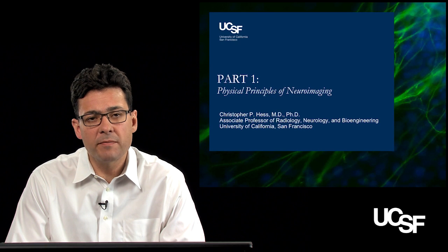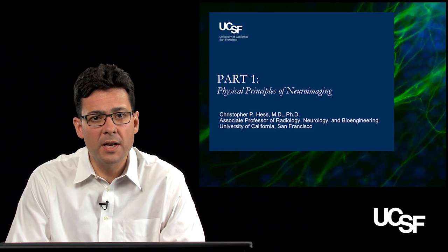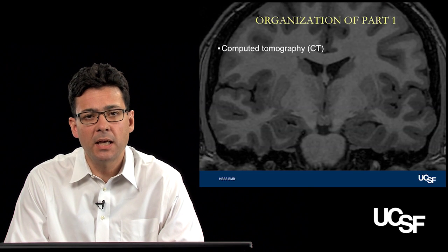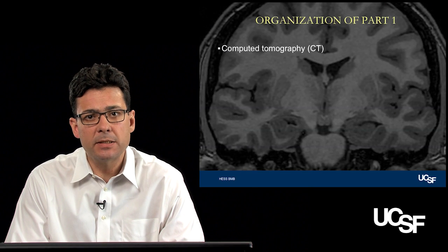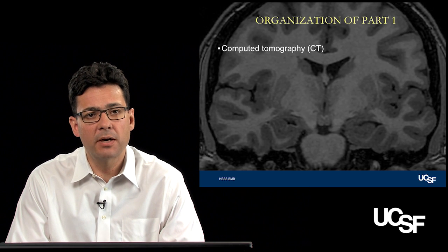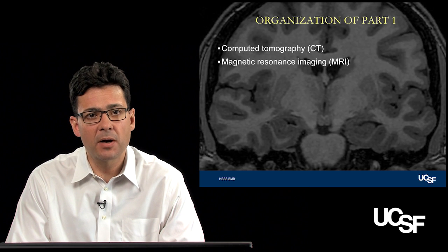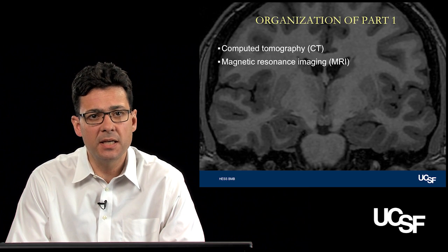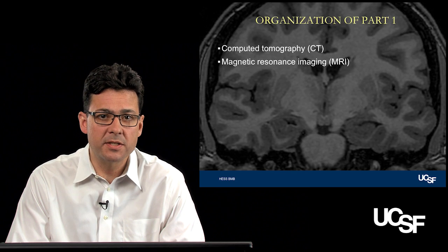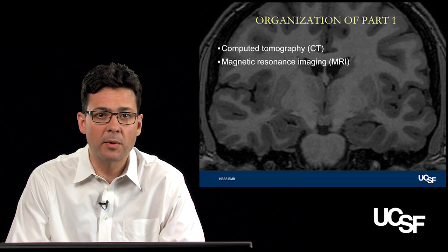With that preface, let's jump right into part one, dealing with the physical principles of neuroimaging. We'll be dividing this into two separate portions: first, covering computed tomography or CT, and in the second portion, covering magnetic resonance imaging or MRI.